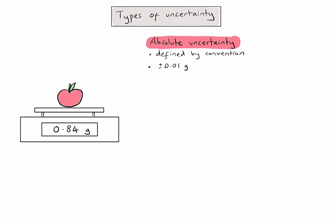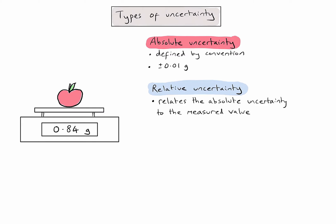The second type of uncertainty we need to consider is relative uncertainty. This is simply a way of comparing the absolute uncertainty to the measured value. All we need to do is divide the absolute uncertainty by the measured value, which in a calculator gives me 0.0119.